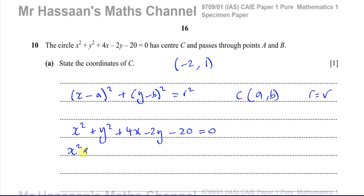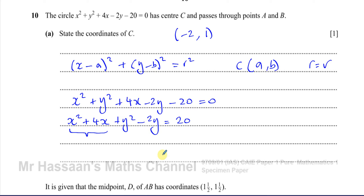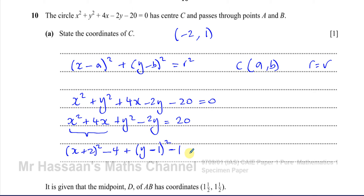So we have x² + 4x and y² − 2y. Adding 20 to both sides to move the constant. Completing the square for x² + 4x gives (x + 2)² − 4. For y² − 2y, we get (y − 1)² − 1. The −4 compensates because expanding (x + 2)² gives x² + 4x + 4, and we only have x² + 4x. Similarly, (y − 1)² = y² − 2y + 1, so we subtract 1.